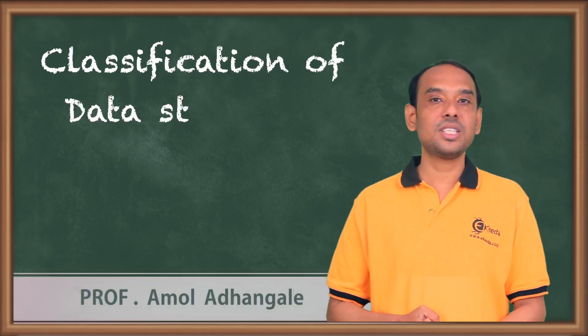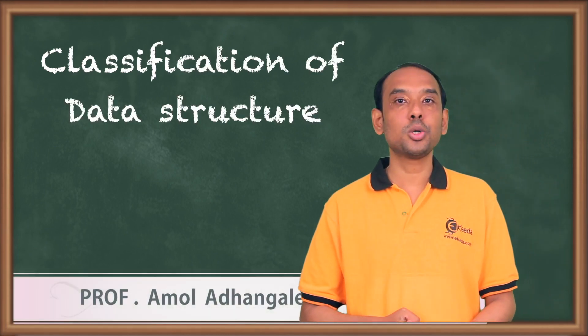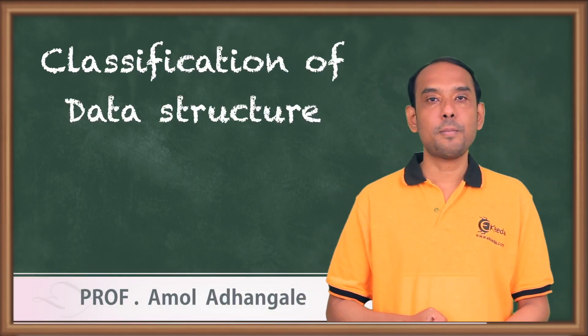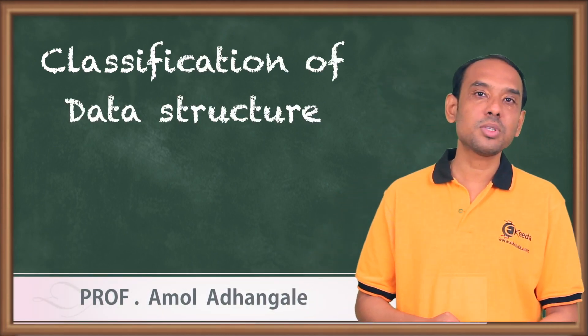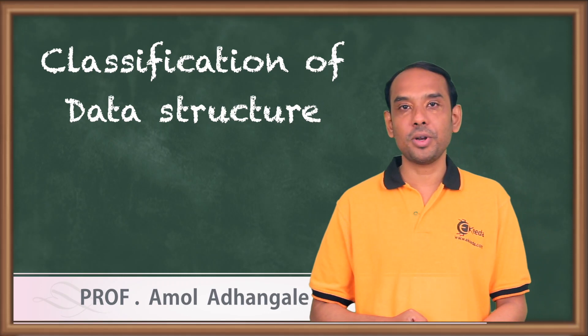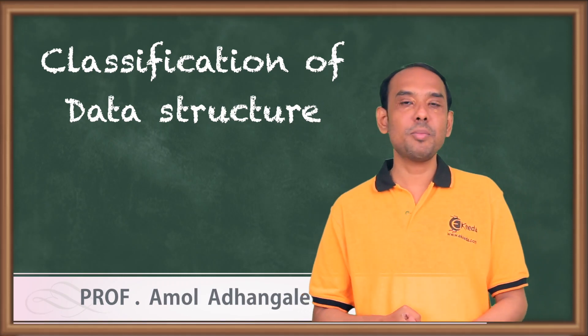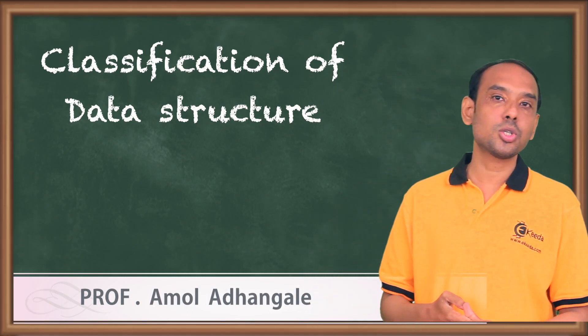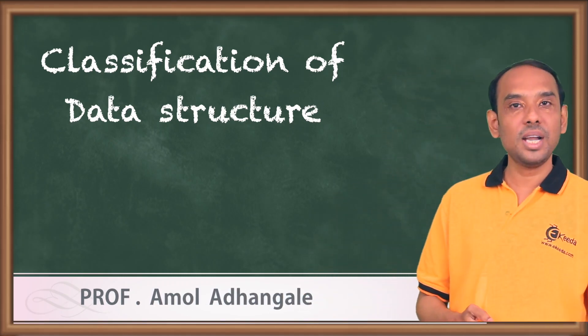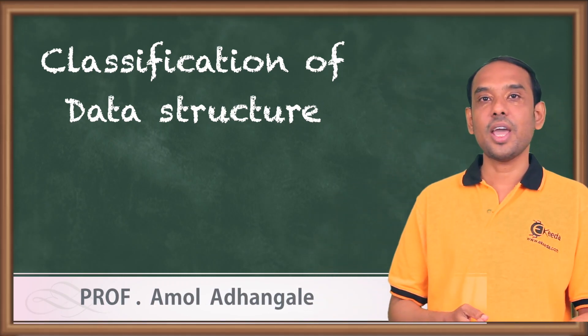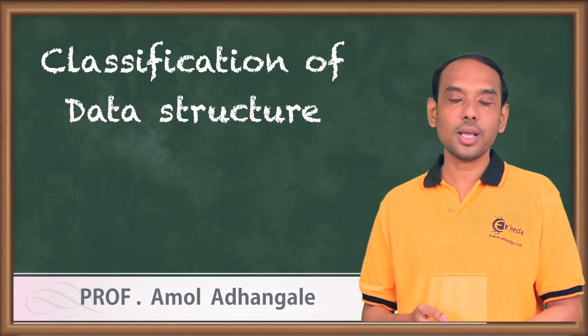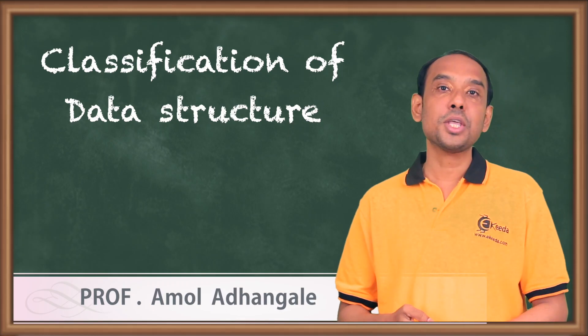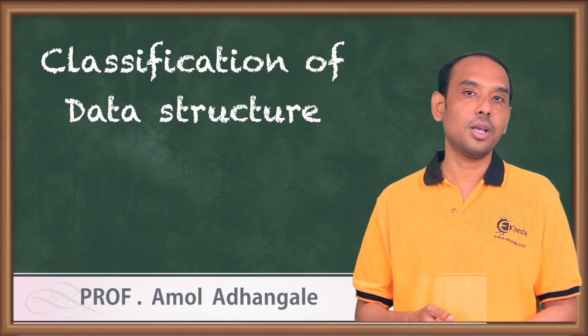Data structures are basically classified into two types: primitive data types and non-primitive data types. Primitive data types are also called built-in data types, and non-primitive data types are called user-defined types.